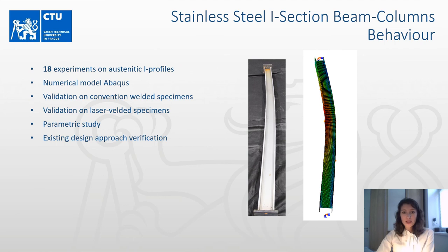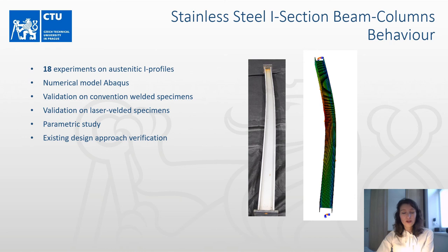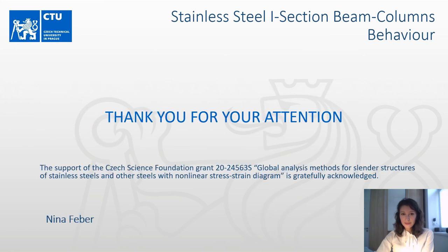To summarize, 18 experiments have been performed. The preliminary numerical model proved to be accurate for conventional welded specimens, and for laser welded specimens, the work on validation will continue. This research will also continue in a parametric study to generate beam column data over a wider range of cross-section sizes, cross-section slenderness, member slenderness, and loading combinations. The accuracy of existing design approaches for stainless steel I-section beam columns will then be verified. Thank you for your attention and I will be happy to answer any questions.